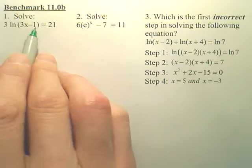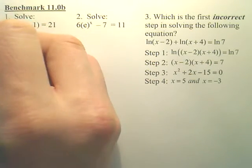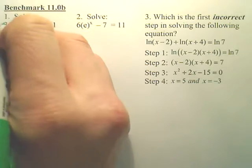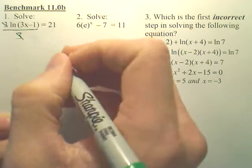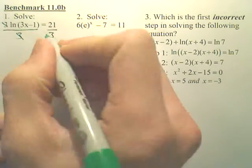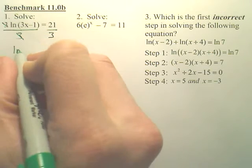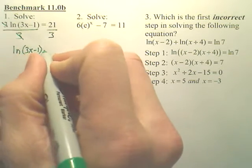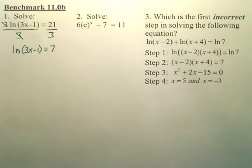To solve this one, we've got to get the ln by itself. So the first step is to divide the 3 off, because it's multiplied by it. So divide both sides by 3. So I have ln, 3x minus 1, equals 7.